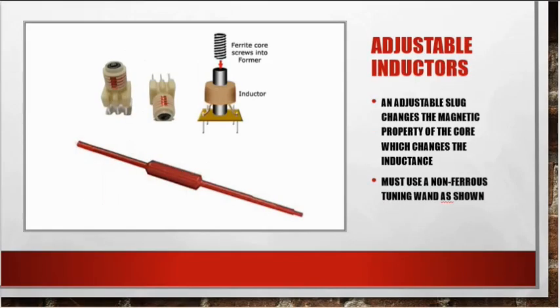Adjustable inductors. A lot of times what we'll do is we'll put an adjustable inductor into an oscillator circuit so that way we can fine tune the frequency. Here's an example of an adjustable inductor. It's a coil of wire and then we have a screw type ferrite core that screws into the middle of the inductor. As we screw this in, we're going to change the magnetic properties and we're going to change the inductance.